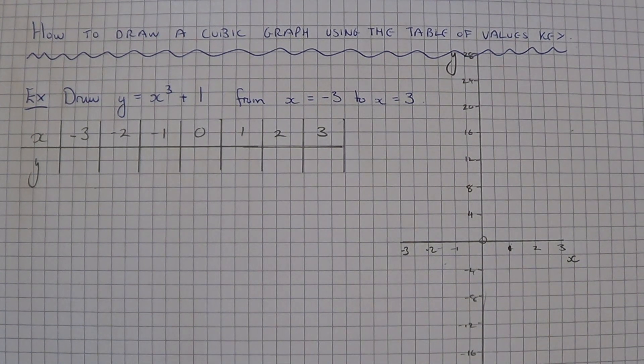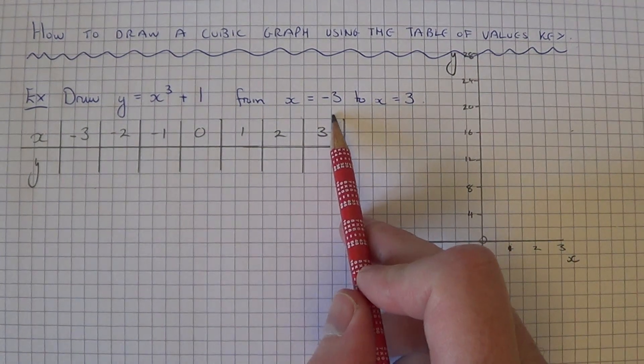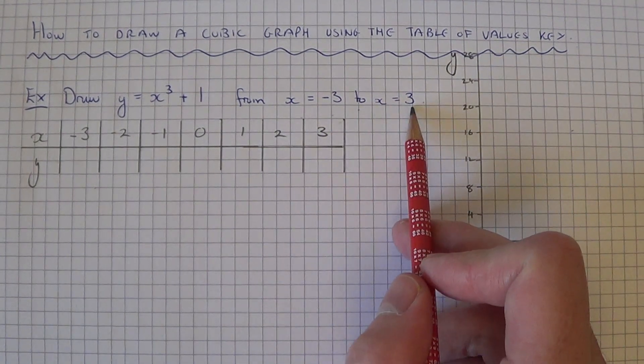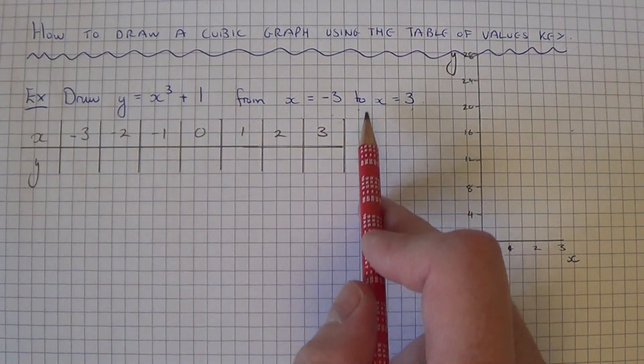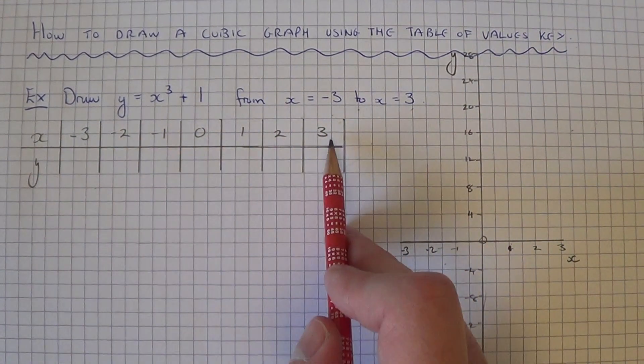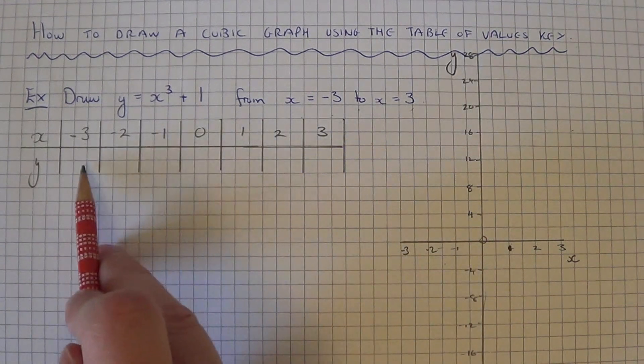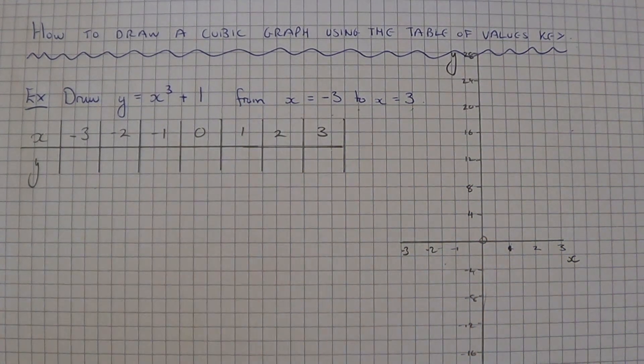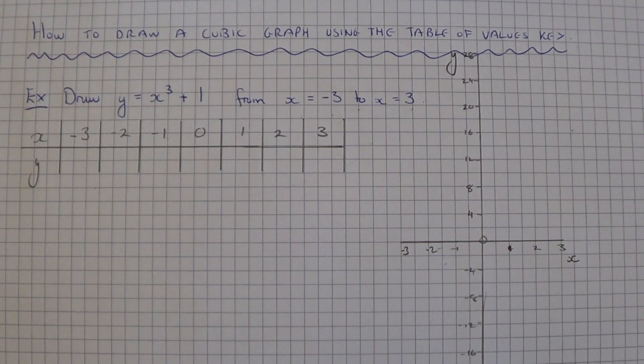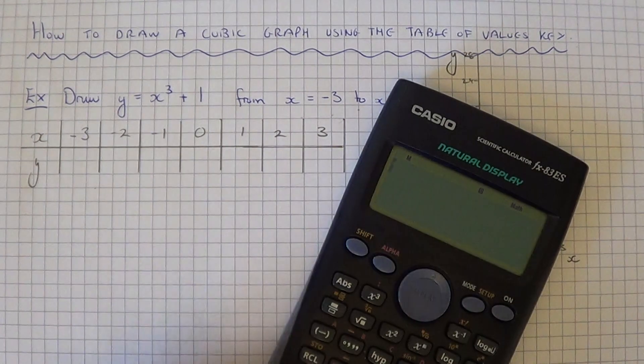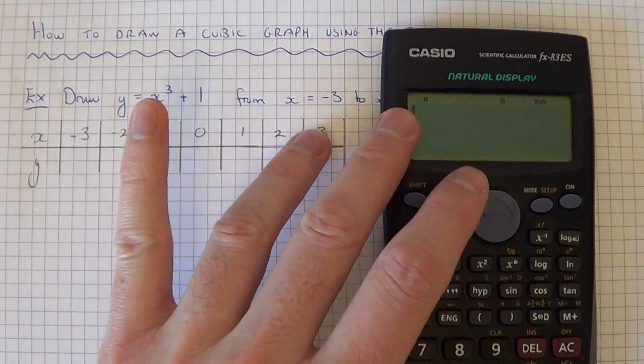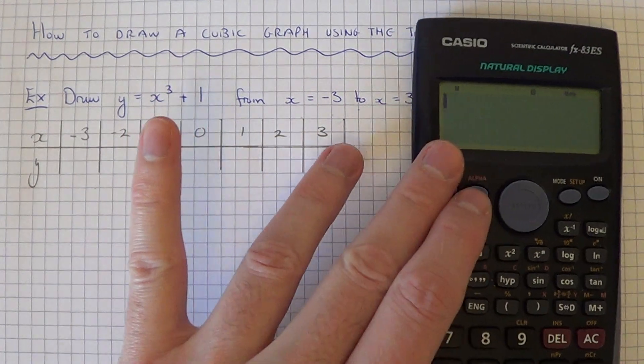We've got to draw the graph of y equals x cubed plus 1 from x equals minus 3 to x equals 3. I've already drawn the Table of Values out, so we've got to go from minus 3 up to plus 3, and we just need to work out the y-coordinates. We're going to use a scientific calculator to complete the Table of Values.